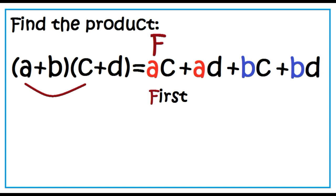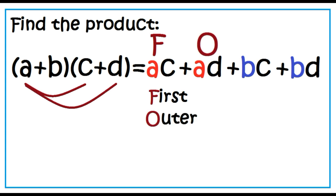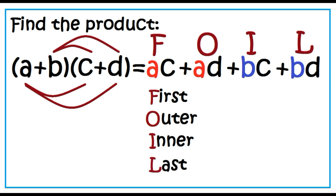AC is the product of the first terms. AD is the product of the outer terms. BC is the product of the inner terms. BD is the product of the last terms. This is what we refer to as the FOIL method.